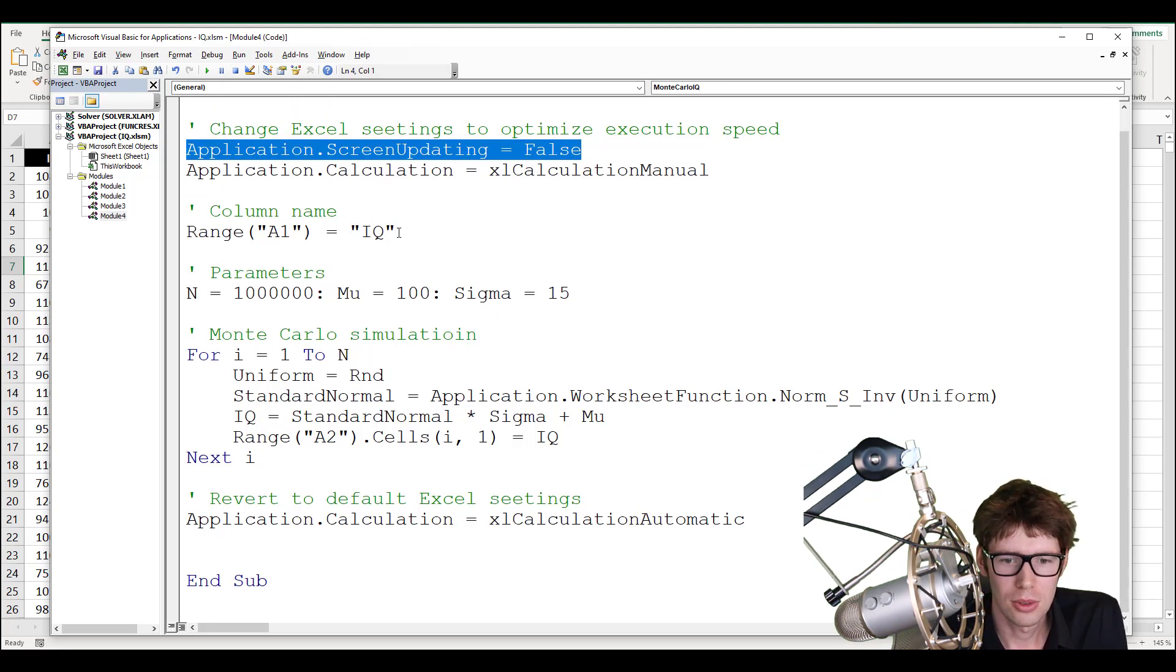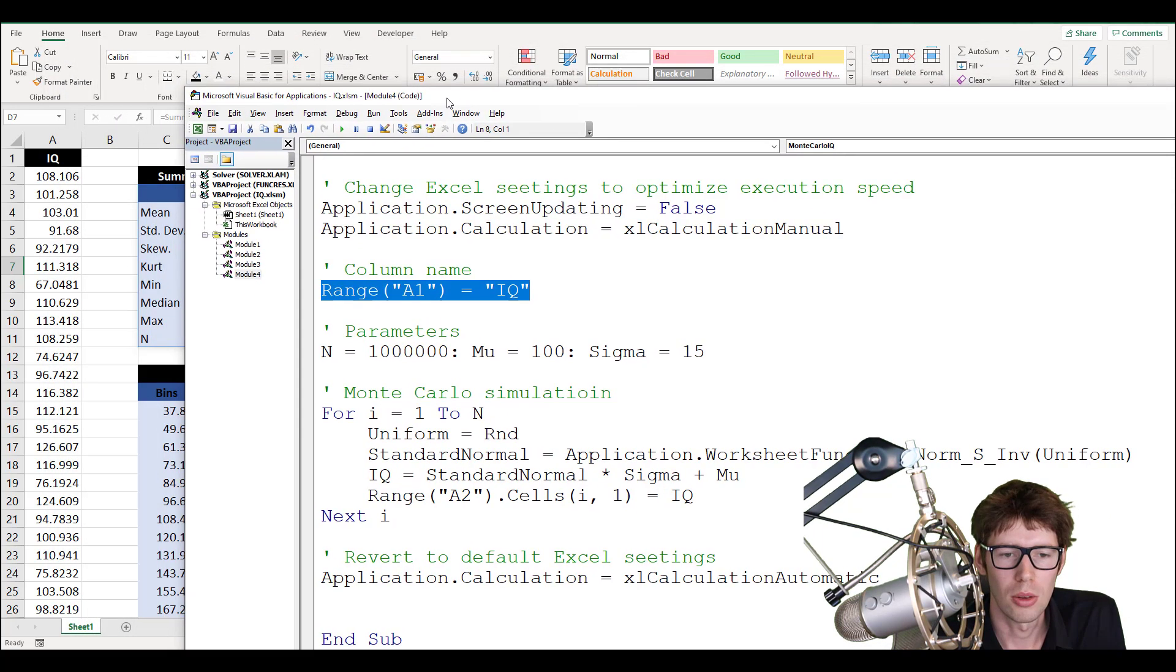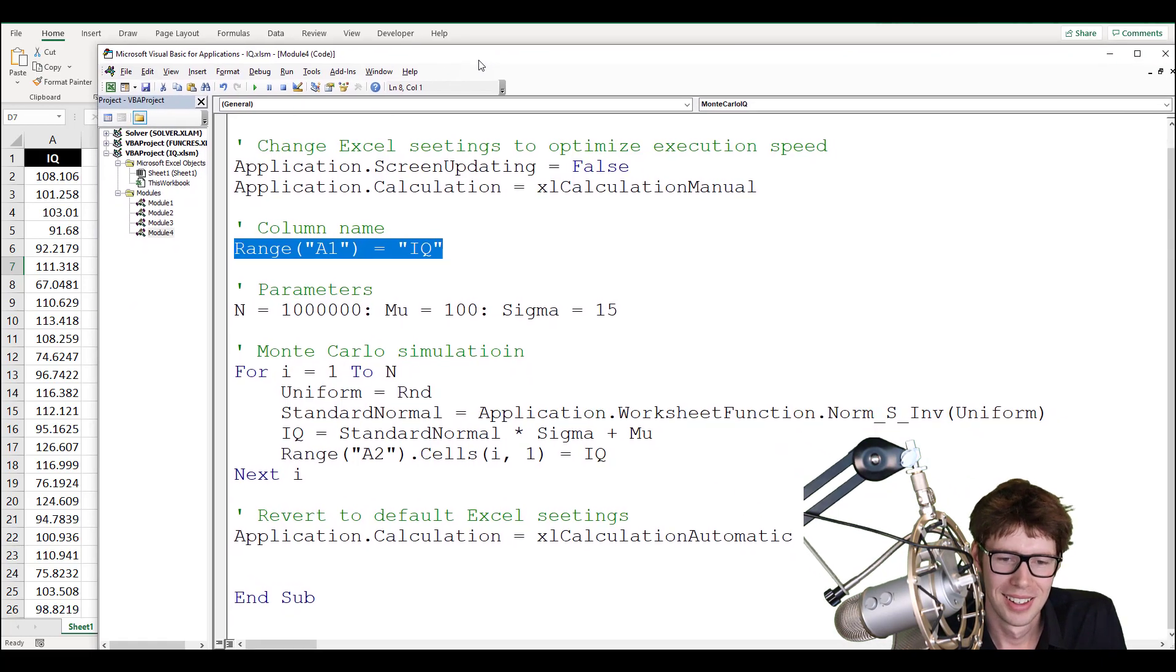So the first thing I do after this is to output a string here in range A1. So that's just the column here. So I'm just outputting IQ. Of course, I could just type this in myself in the worksheet, but hey, you can do it in VBA too.